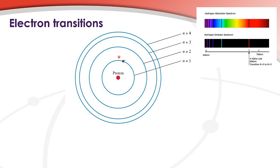Here we have an electron in the n equals 1 energy level. If this electron absorbs an exact amount of energy, it can transition or move to the n equals 2 energy level. Here we have another electron in the n equals 2 energy level. If this electron absorbs an exact amount of energy, it can transition to the n equals 3 energy level.